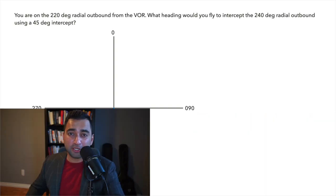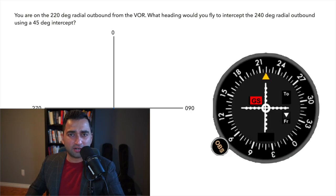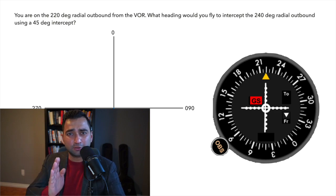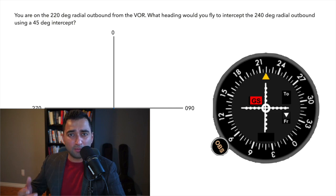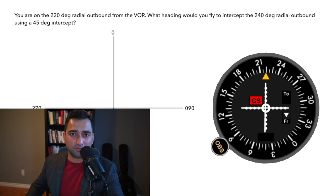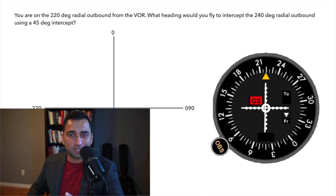Now let's look at the same example using the VOR indicator in the aircraft. When you use a VOR in an aircraft, always tune and identify the VOR. Then twist the OBS knob until the needle comes to center. Because we want to get away from the station, we want to see the FROM indicator flag, and always put the outbound radial on the top. In this case, 220 degrees is on the top of the VOR indicator, and the needle is centered, confirming we are on the 220 degree radial.